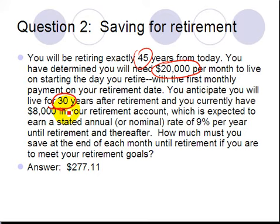Now, currently, you have a certain amount of money in your retirement account. You've got $8,000 in your retirement account, and you're going to earn a rate of return on that. The question is, how much must you save at the end of every month until retirement in order to be able to fund this? And so we have to do it in two separate steps, so let's talk about what those two steps are.